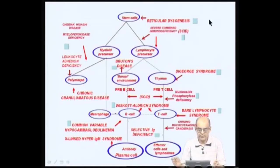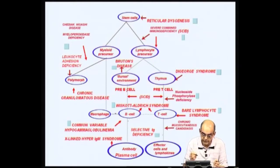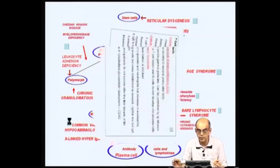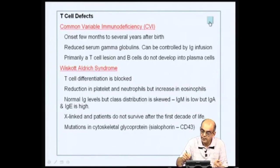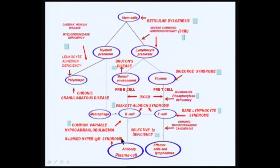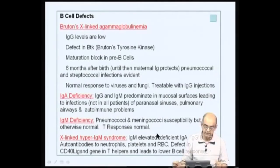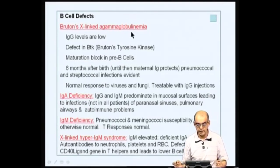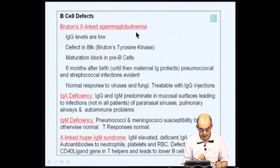Going back to the tree, we have covered Wiskott-Aldrich syndrome and other diseases. Let us look at diseases affecting B cells, like the X-linked hyper-IgM syndrome or common variable hypogammaglobulinemia. The hyper-IgM syndrome results in more IgM. Now looking at B cell defects — you have selective IgA deficiency or selective IgM deficiency, where IgG and IgM predominate at mucosal surfaces, because IgA normally predominates in mucosal associated lymphoid tissue.